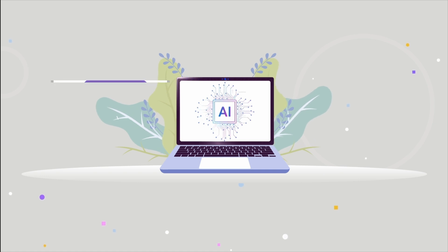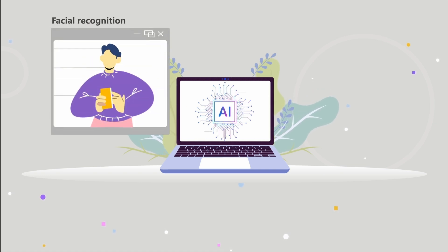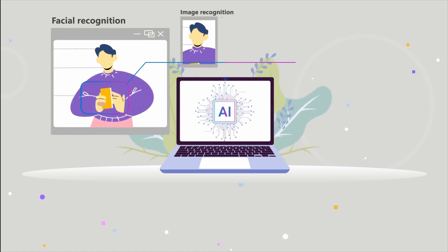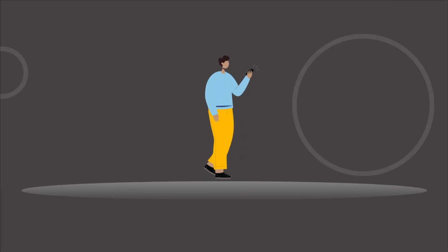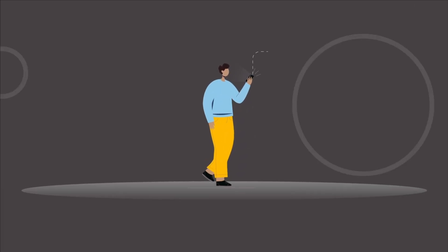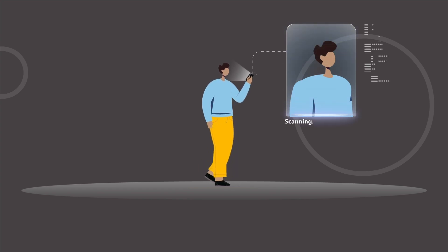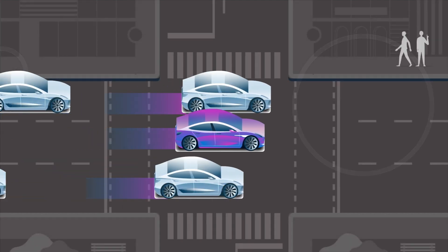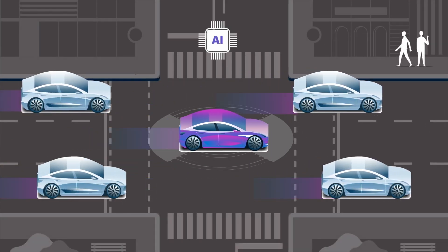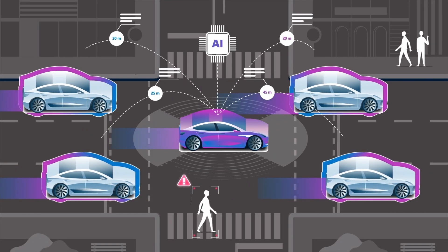Computer Vision has various applications, including facial recognition, image recognition, and object detection. You use facial recognition when using Face ID to access mobile devices or computer systems. Self-driving cars use object detection and tracking to monitor the car's surroundings and adjust routes accordingly.